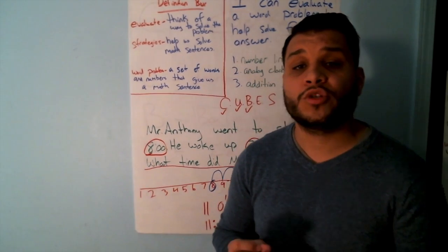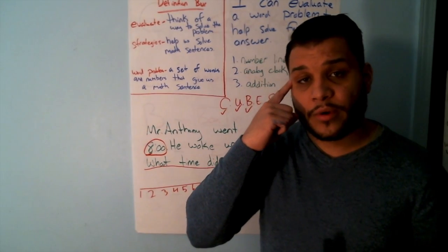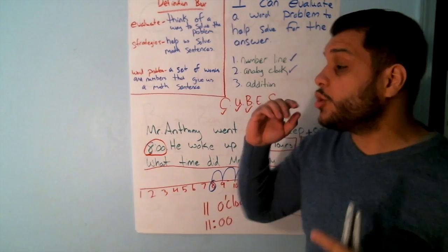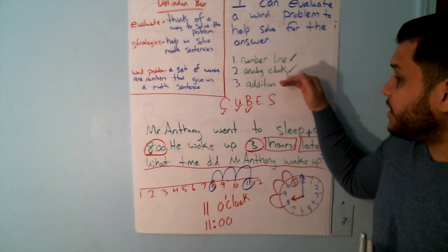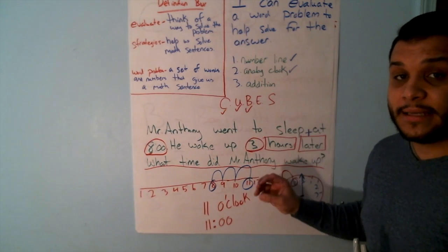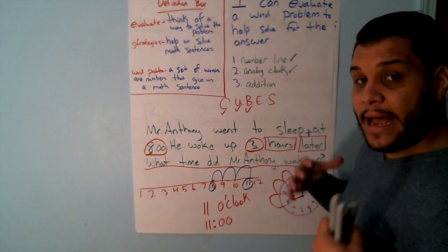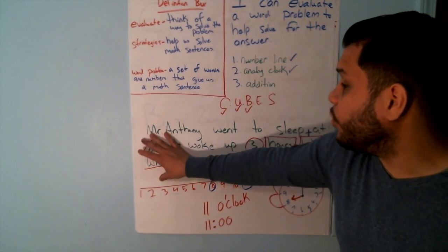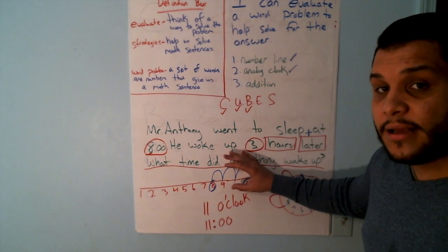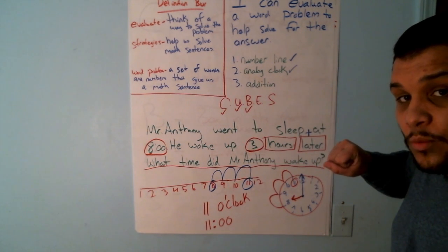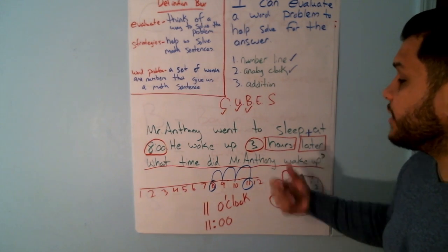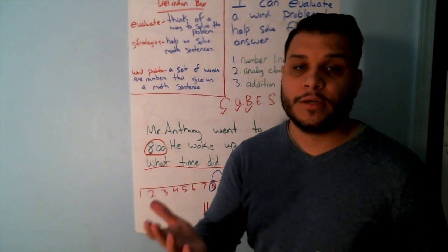When you go to do your individual work today, make sure that you are remembering to evaluate. When you evaluate, you are thinking about which strategy is going to help me solve my math sentence. I take a step back, focus on what I've circled, what I've underlined, what I've boxed in, and then I should be able to pull out what my equation is or how I'm going to solve this problem. Kiss your brain.